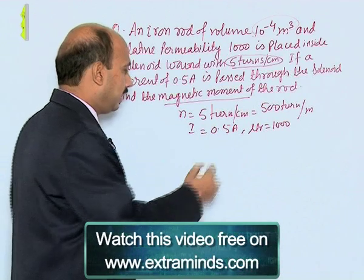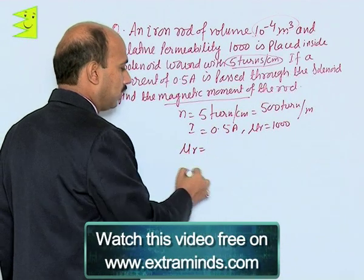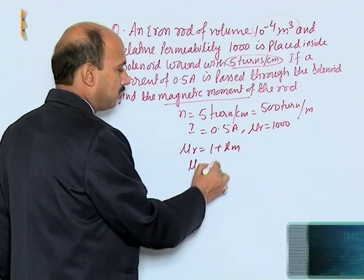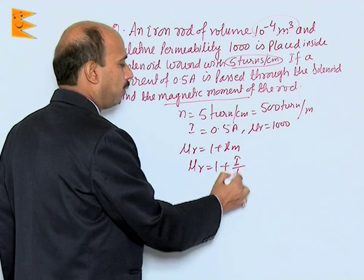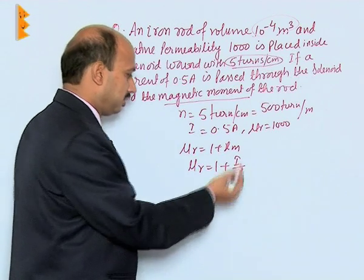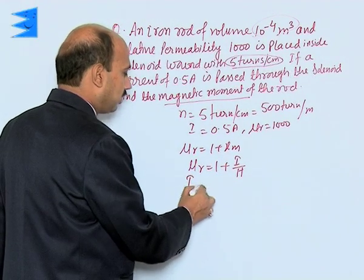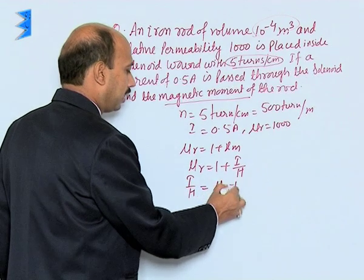So first we can take here mu r is equal to 1 plus chi m, and that is mu r is equal to 1 plus I upon H, where I is the intensity of magnetization. So we can write I upon H is equal to mu r minus 1.